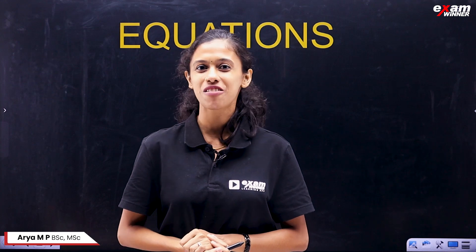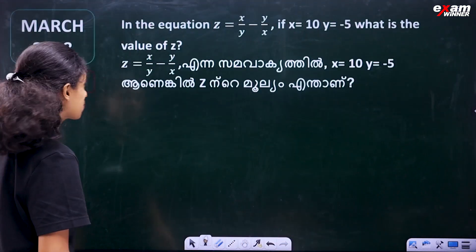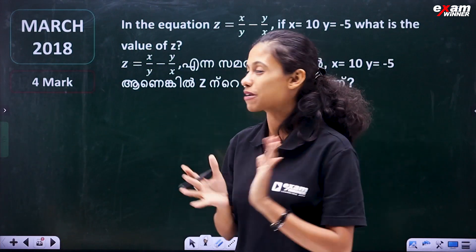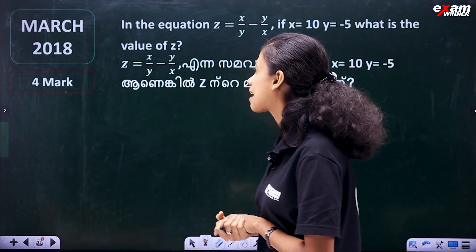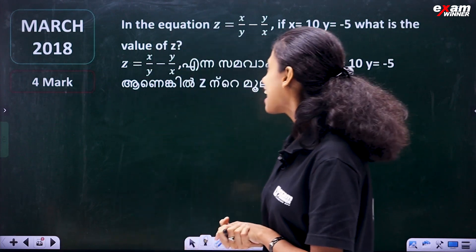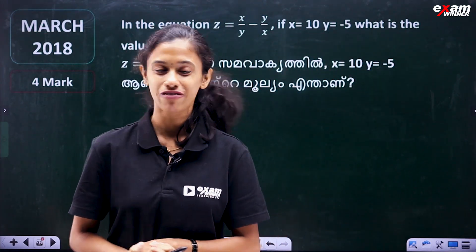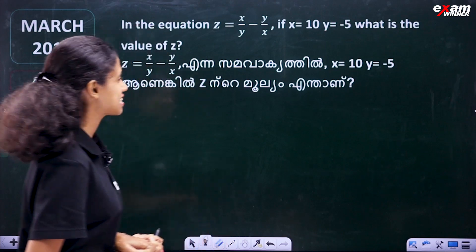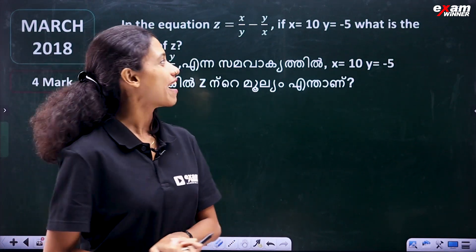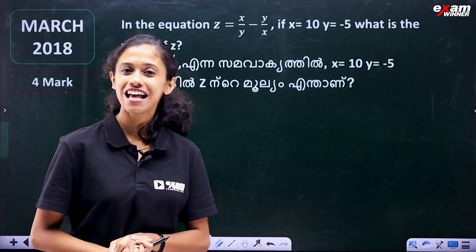Now, we have to solve this equation. This is the question from the previous year — it is 4 marks. The equation is z = x/y minus y/x. If x is equal to 10 and y is equal to minus 5, what is the value of z?